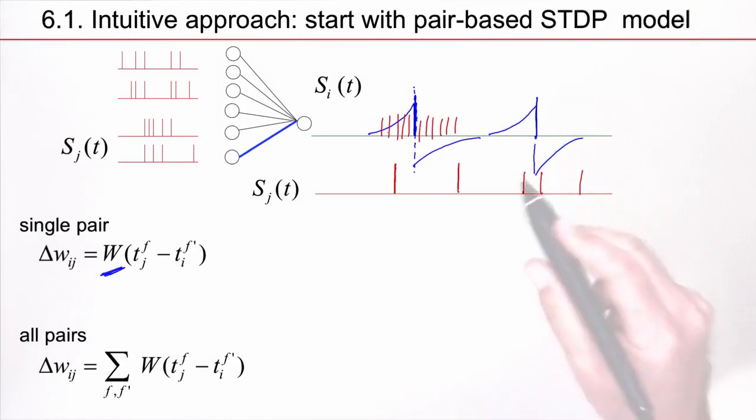And this means sometimes it goes up, for this spike it goes up, and sometimes it goes down. Sometimes the weight goes down, here it goes down. So what really matters is the surface of this STDP window.